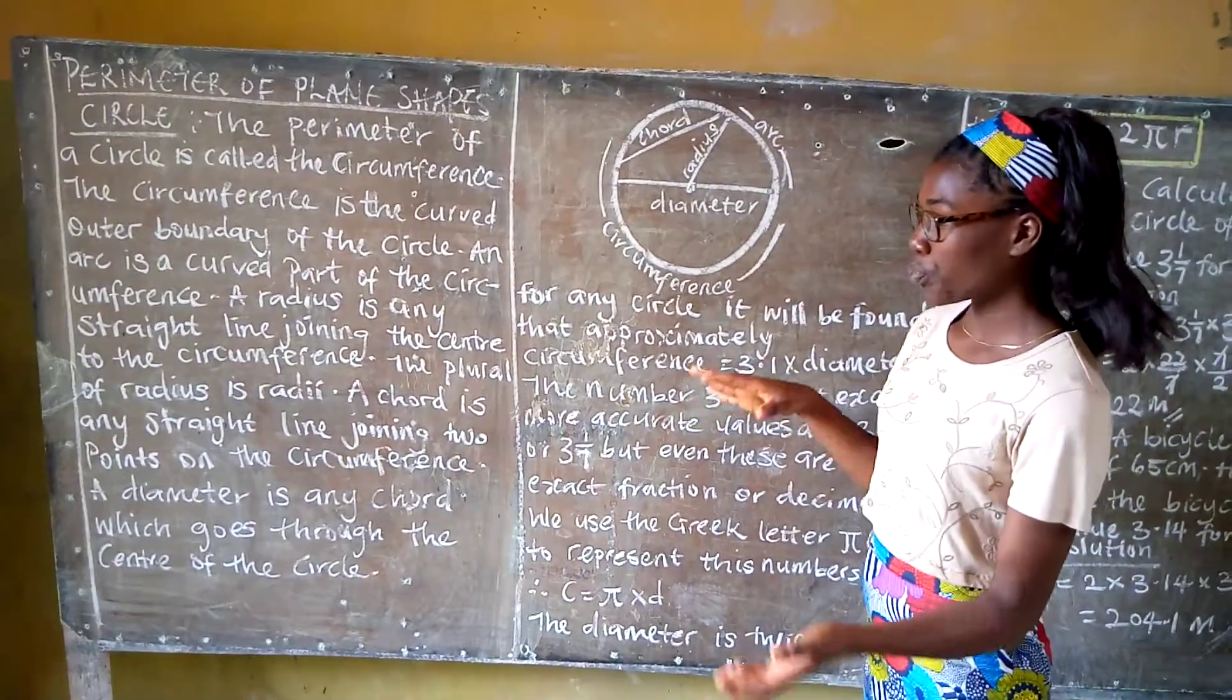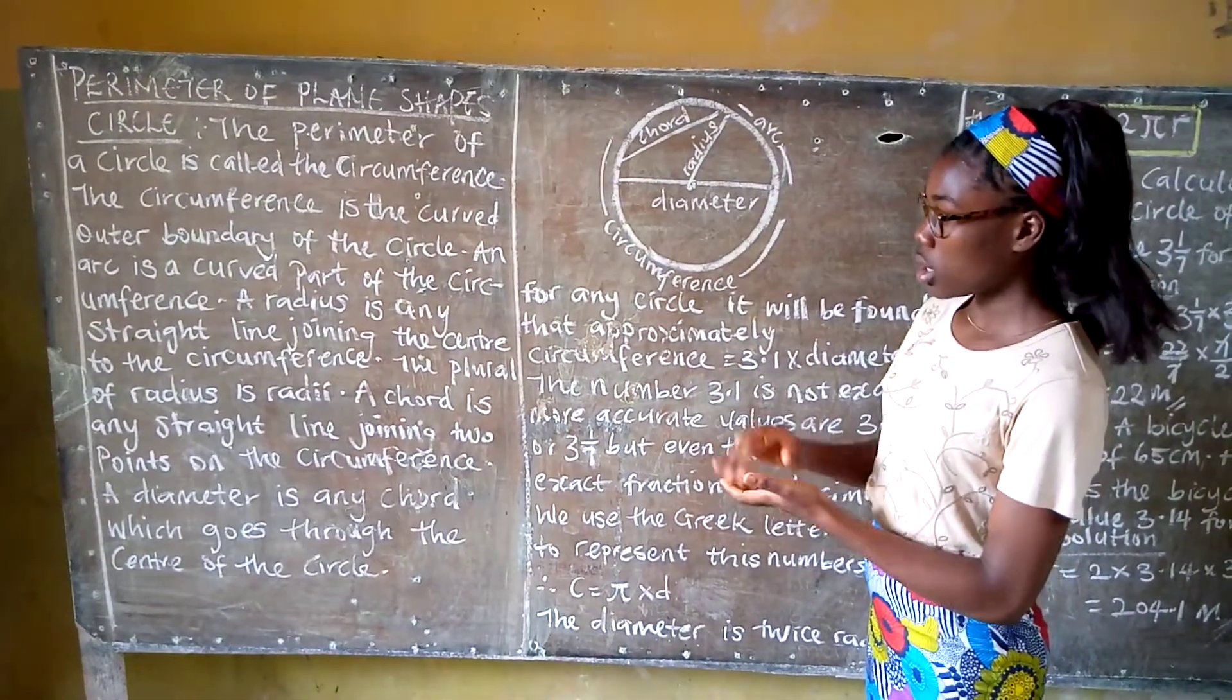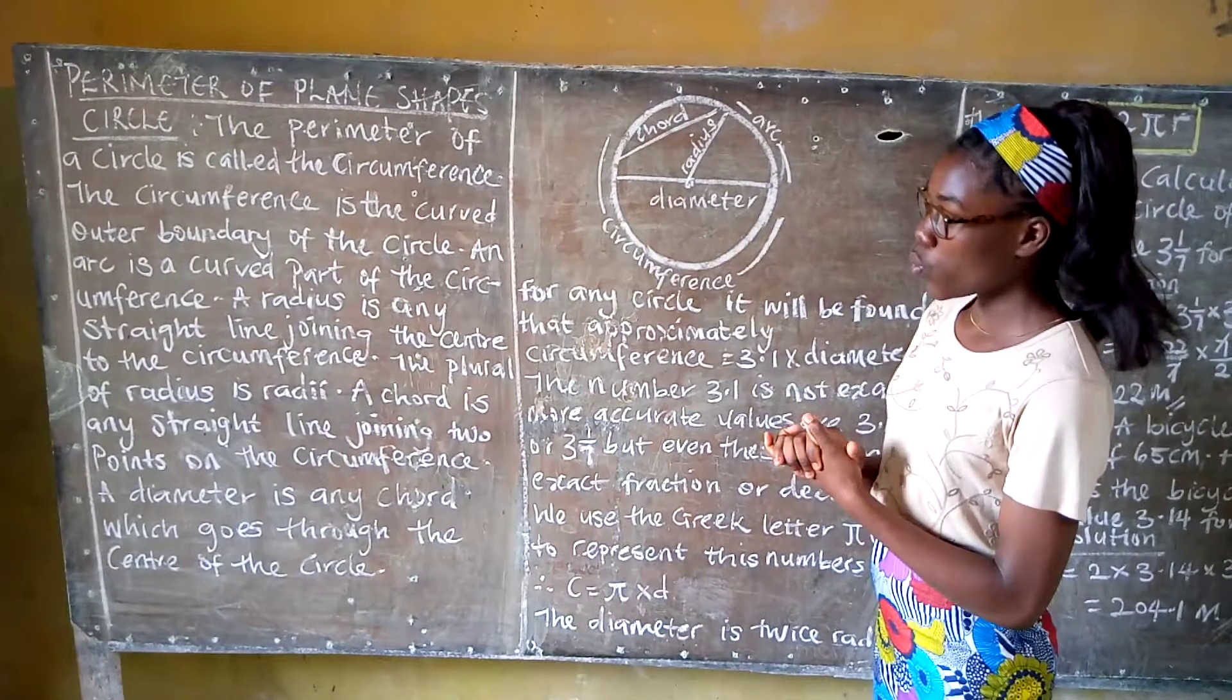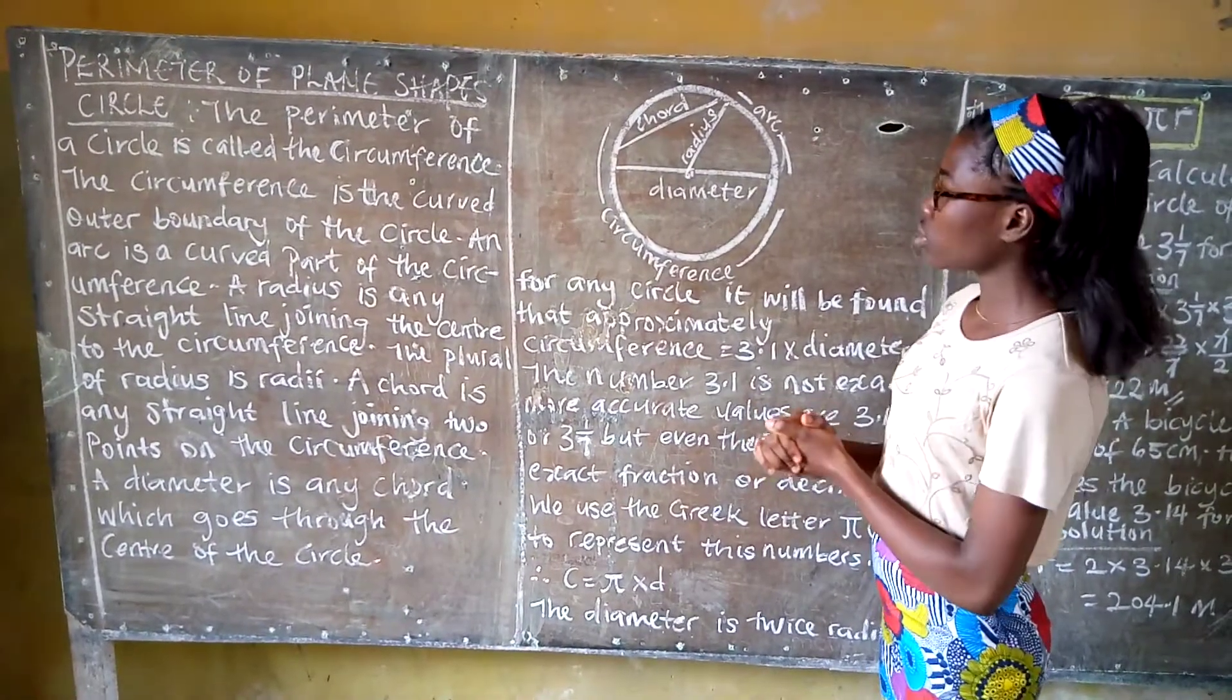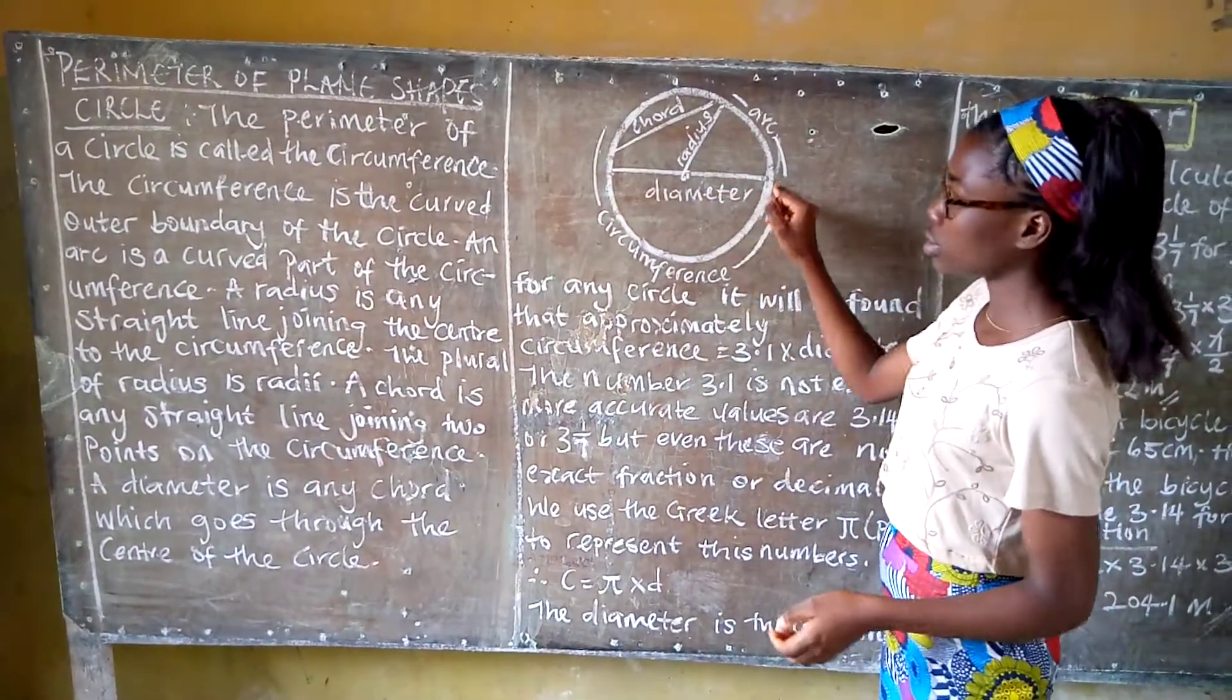We also have a diameter. The diameter is any chord which goes through the center of the circle.